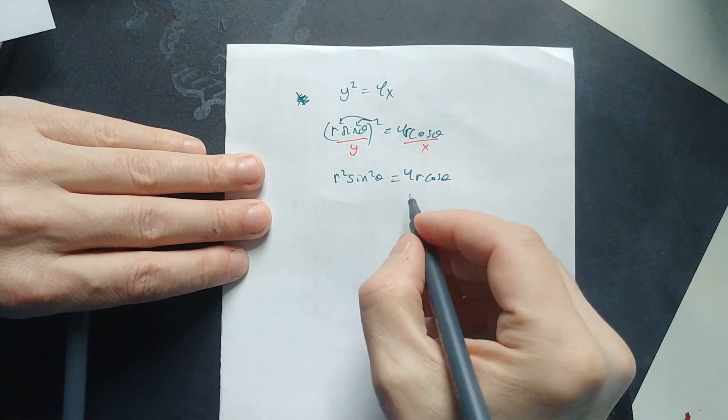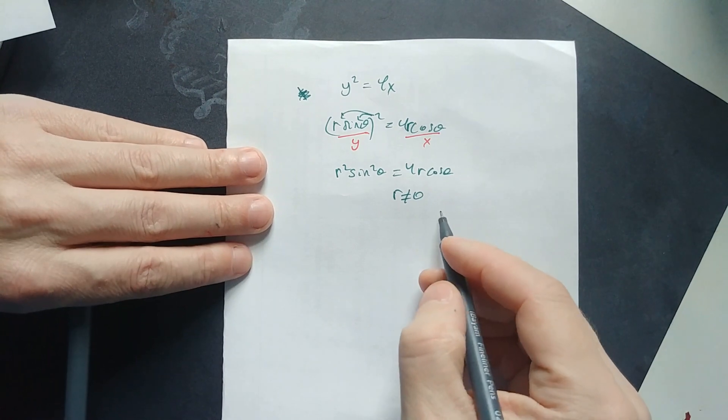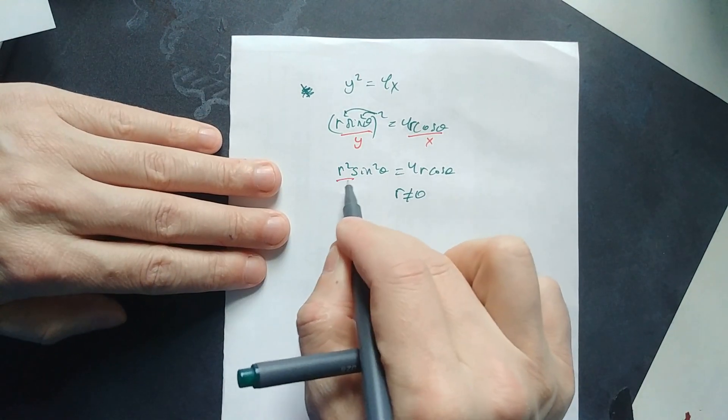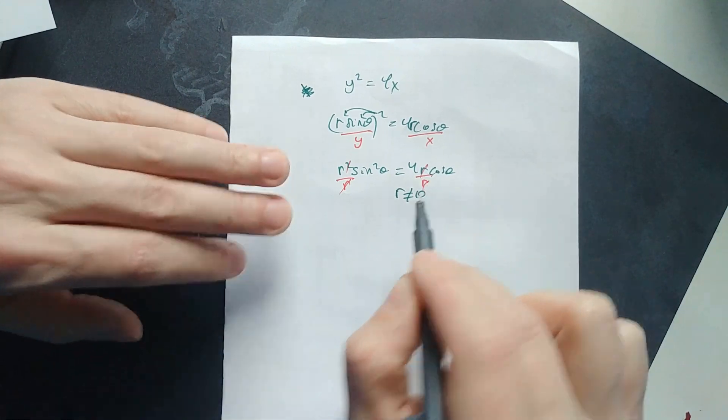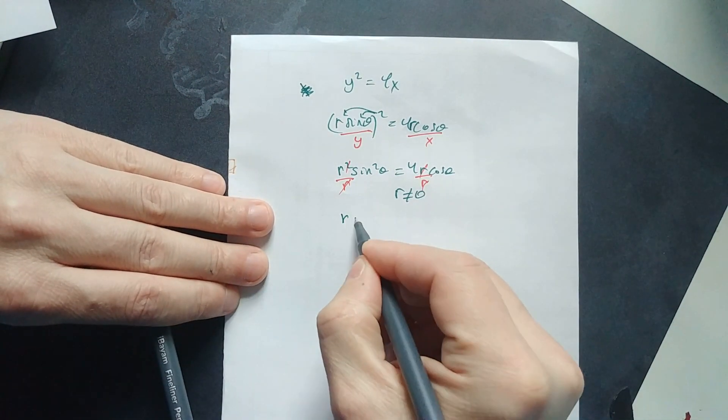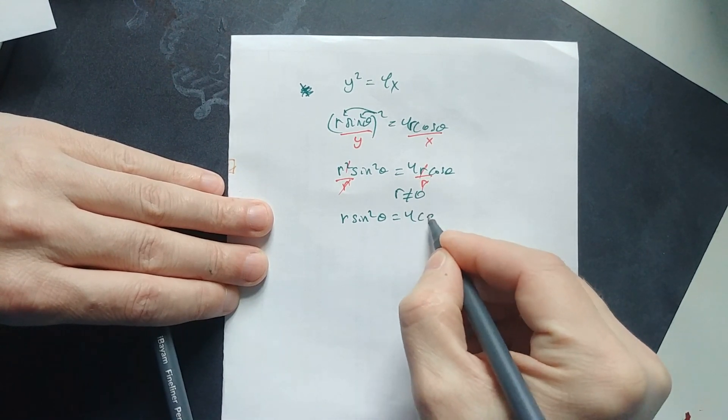From there we're going to assume that r is not equal to 0, so you can divide it away. We're going to divide by r here and then also divide by r right here. That's going to leave us with r sin² θ = 4 cos θ.